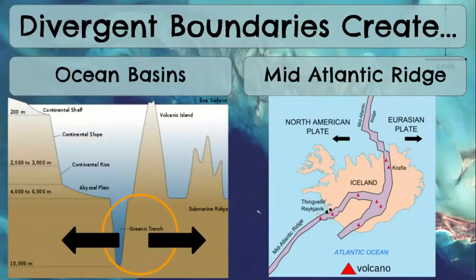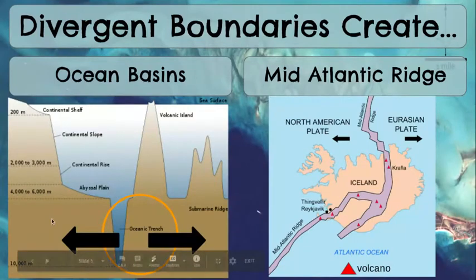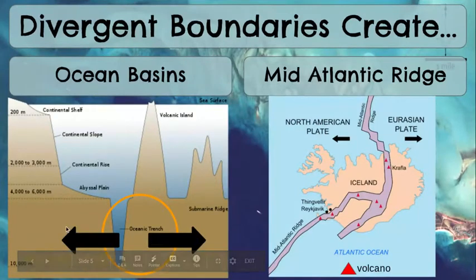So our divergent boundaries can create ocean basins, which I have shown down here. Remember, your arrows have to move in opposite directions to show that the earth is opening up and spreading.